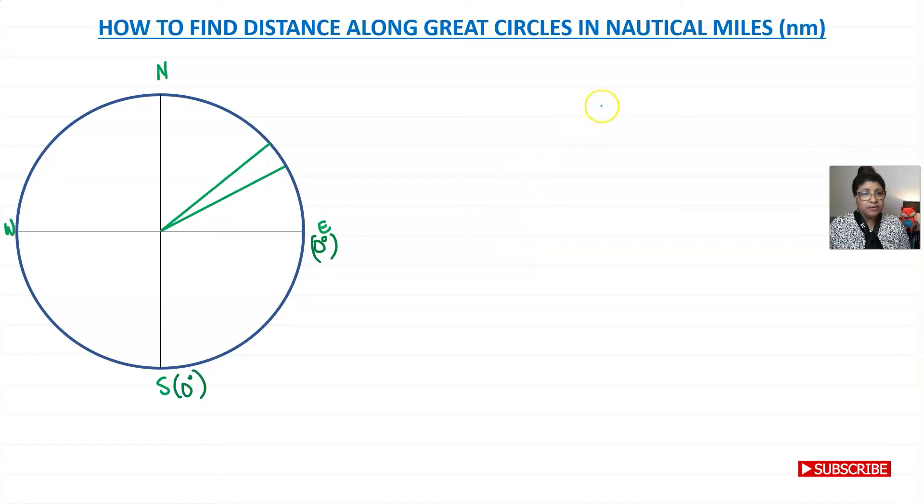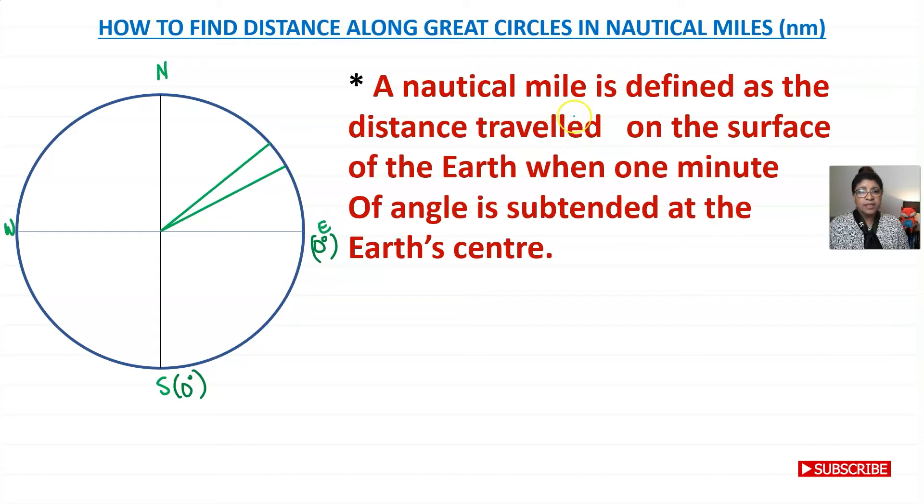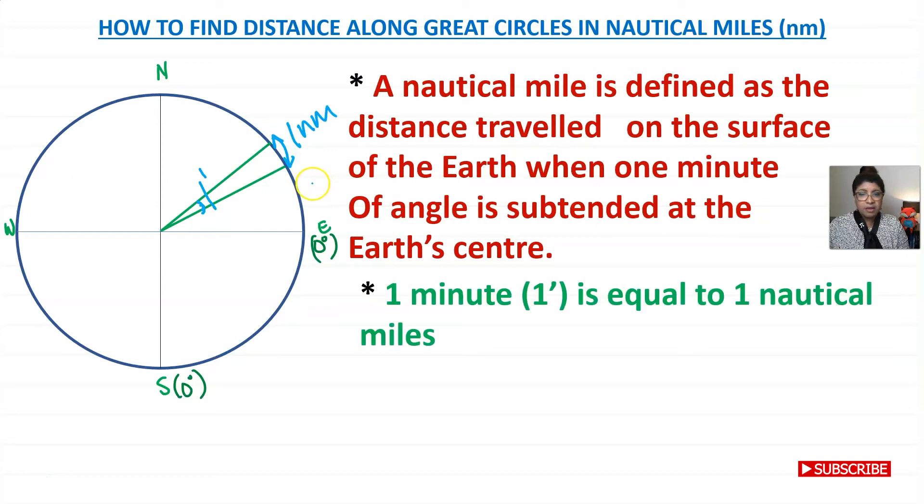Let's start by defining what a nautical mile is. A nautical mile is defined as the distance travelled on the surface of the earth when one minute of angle is subtended at the earth's center. What does that mean? If you have one minute here, this angle, then on the surface of the earth, you have one nautical mile. That's what it means. And so now you know one minute is equal to one nautical mile.